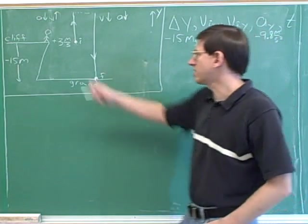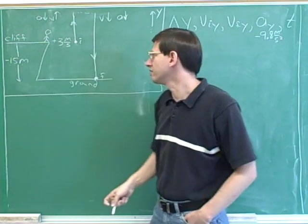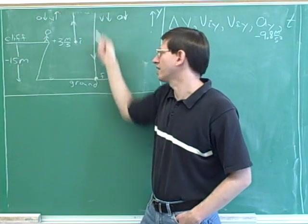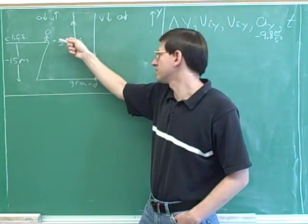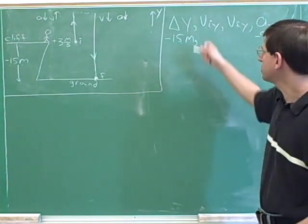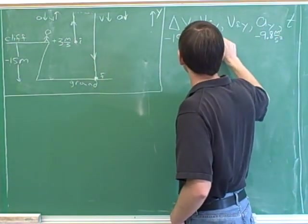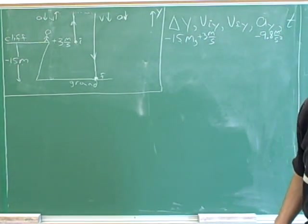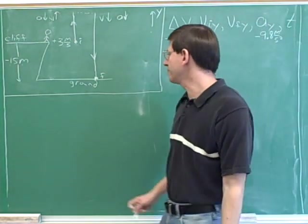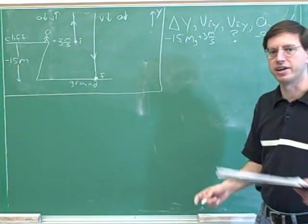Since the initial point is on the cliff and the final point is on the ground, the displacement is 15 meters downward, which is negative 15. Our initial vertical velocity is positive 3 meters per second, because we chose up to be positive. The question asks us to find the velocity with which the object strikes the ground. We've labeled striking the ground as our final point, so the question is asking us for the final velocity.